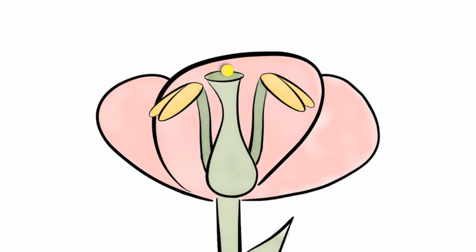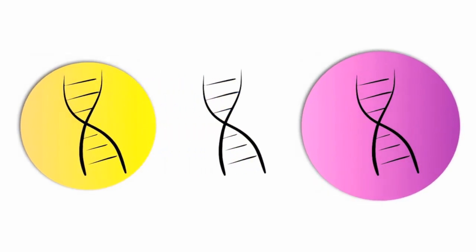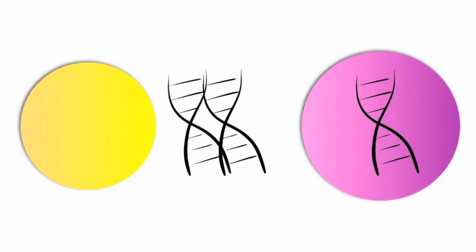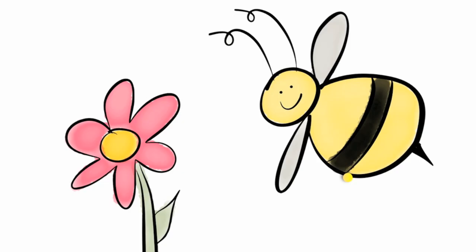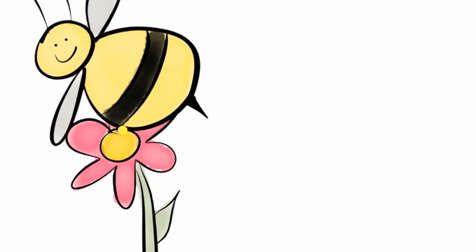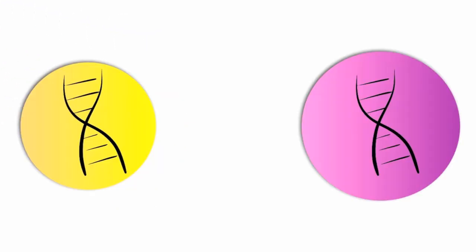The next step is fertilization. The joining of the reproductive cells happens when the pollen grows a tube down the female part and meets with the egg. Genetic material from the pollen and the egg combine. The development of a seed begins. If conditions are favorable, the newly developed seed will grow into an adult plant. Flower reproduction can be summarized as pollination followed by fertilization.